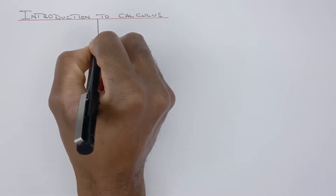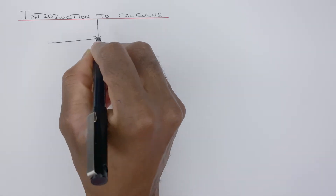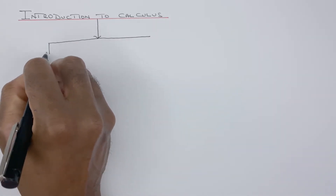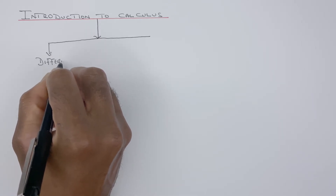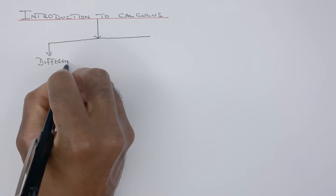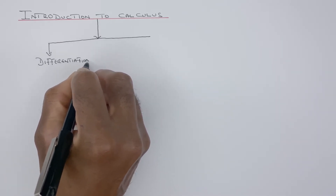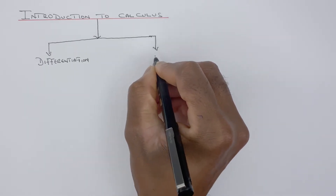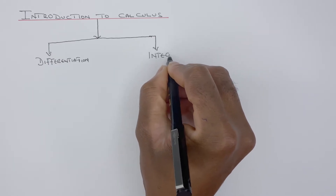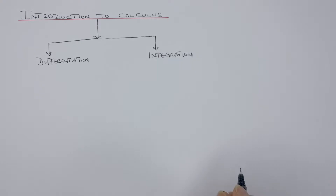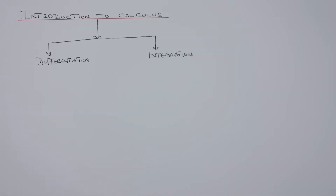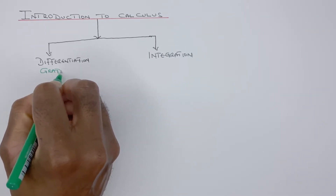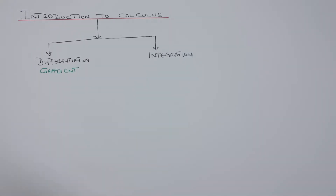Calculus is split into two parts. The first part is called differentiation, and the other part is called integration. Differentiation is basically finding the gradient, and integration is basically finding the area.